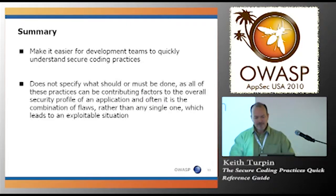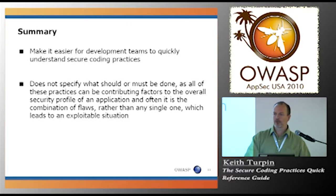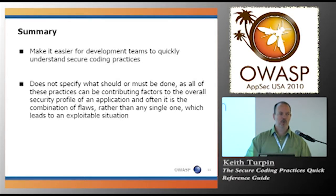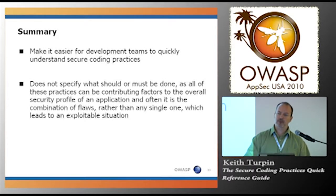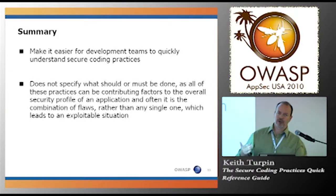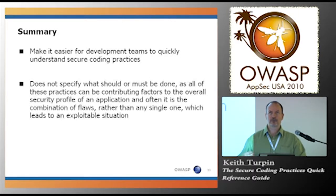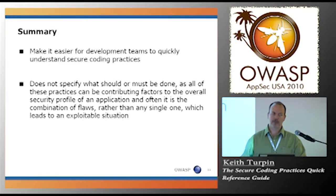In summary, the guide is designed to be simple, short, easy to use, easy to digest, and easy to hand off to a development team to give them a kickstart. It's not solving world hunger in the application security world—it's giving them a starting place to understand what they're expected to do to make software more secure. It doesn't specify what must be done versus what should be done, which is an important concept. One thing we're discussing with project leaders is prioritizing the recommendations, because right now the recommendations are not prioritized.